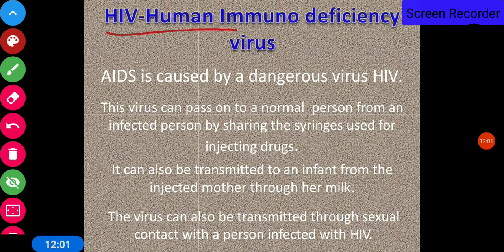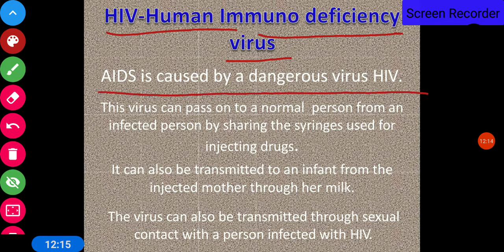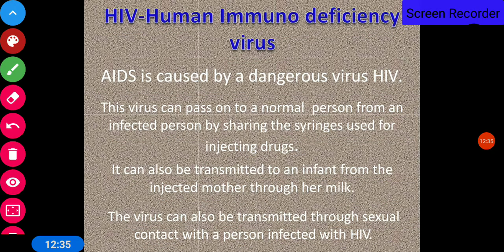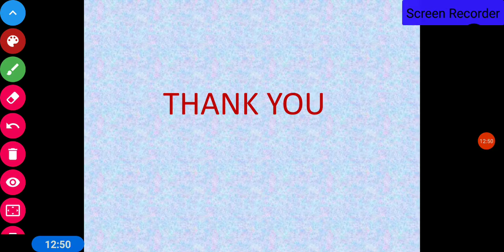HIV stands for Human Immunodeficiency Virus. AIDS is caused by this dangerous virus. HIV can pass from an infected person to a normal person through sharing syringes used for injecting drugs. It can also be transmitted to an infant from an infected mother through her milk, and through sexual contact with an HIV-infected person. One should be very careful to keep away from being infected by AIDS. Thank you and have a nice day.